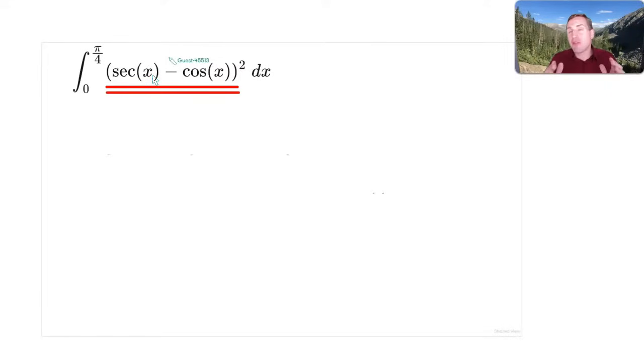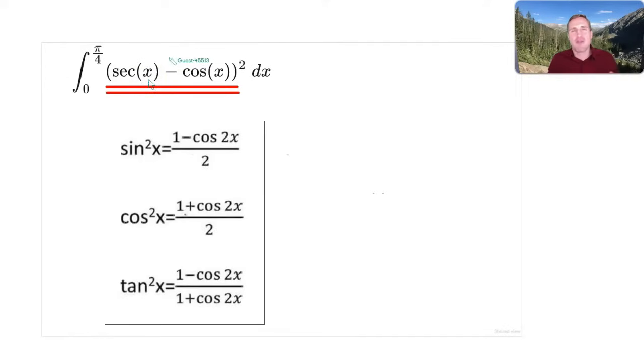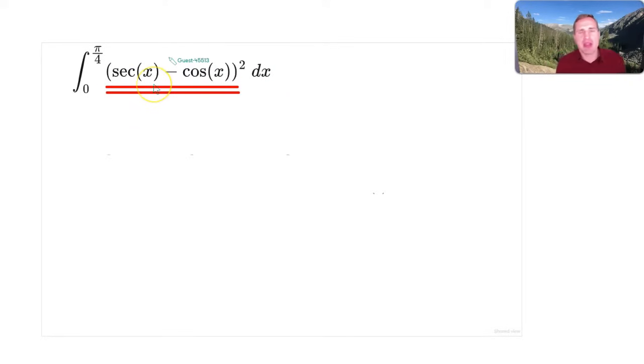You'd end up with sin⁴(x)/cos²(x), which would be tan²(x) times sin²(x). And that's a little difficult to integrate because you need to use the power reducing formulas for both tan²(x) and sin²(x). If you don't know exactly what I mentioned, don't worry about it. But in any case, let's consider a different method here.